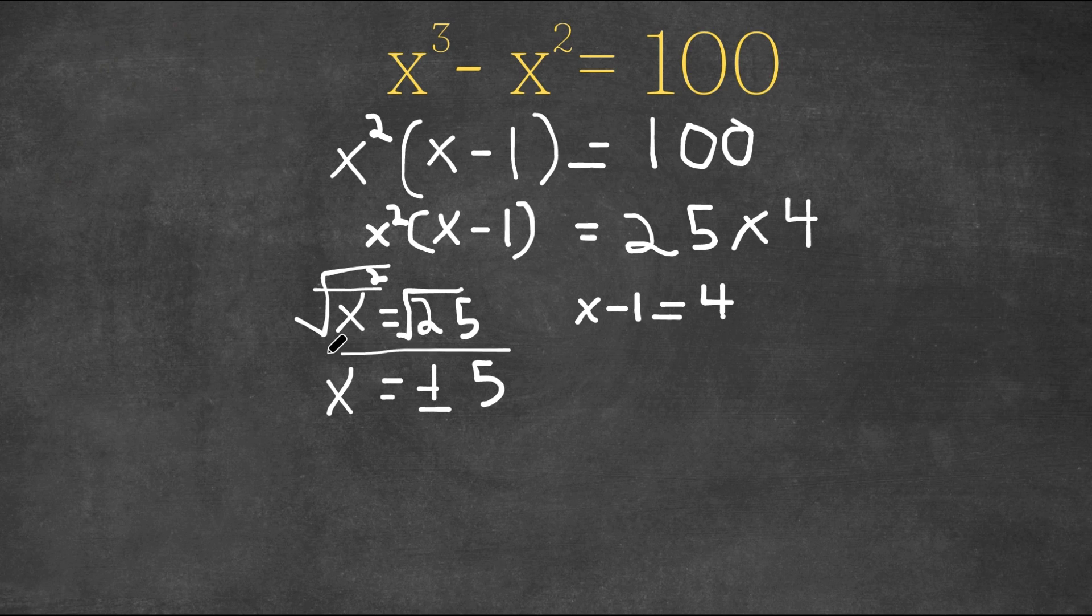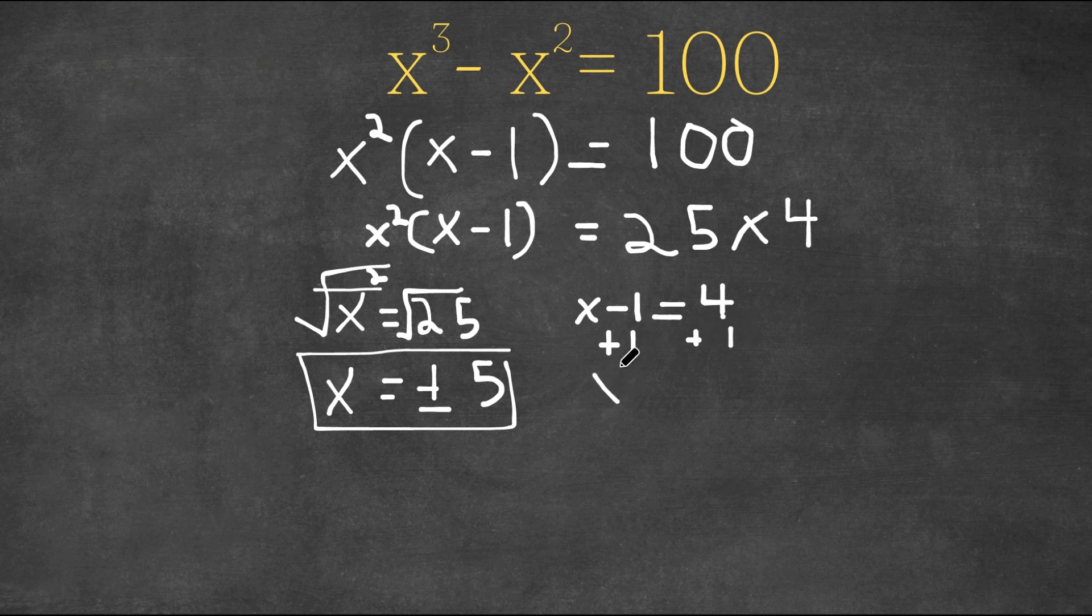So as you can see, this is 1 solution, and x minus 1 equals 4. Well, we would add 1 on both sides. And if we do that, we get x, these two cancel out, equals 4 plus 1 is 5.